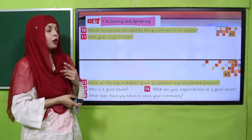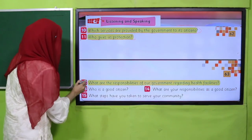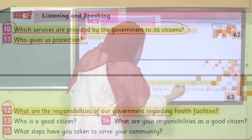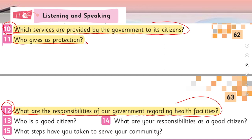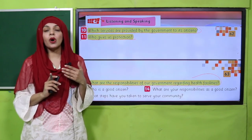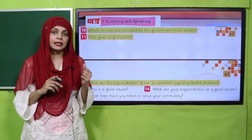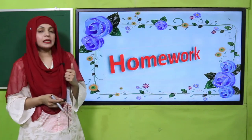Now it's time for evaluation. I will ask some questions orally and you will answer them on page number 62. Question 10: Which services are provided by the government to its citizens? Education, healthcare, water, electricity, gas, waste management, and transportation. Who gives us protection? Our government gives us protection with the help of military and police force. Question 12: What are the responsibilities of our government regarding healthcare? Basic healthcare facilities should be provided to all citizens — clinics, dispensaries, and hospitals throughout the community so people can easily reach them, even in backward areas.